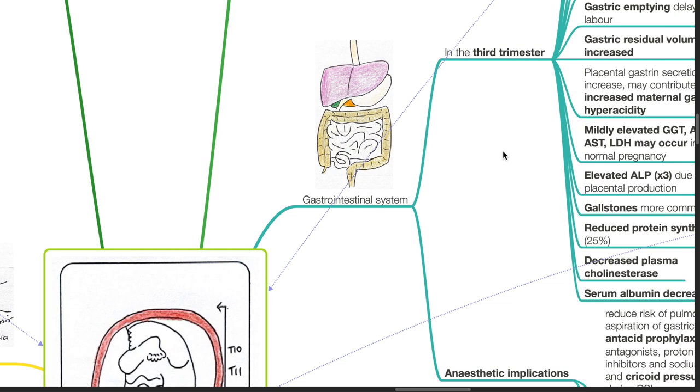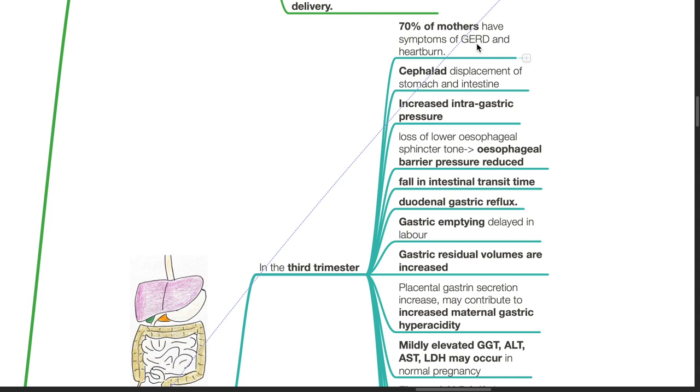Gastrointestinal System: In the third trimester, 70% of mothers have symptoms of GERD and heartburn. Cephalad displacement of the stomach and intestines occur. There is increased intragastric pressure. Loss of lower esophageal sphincter tone results in reduced esophageal barrier pressure.